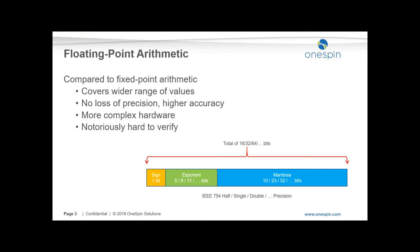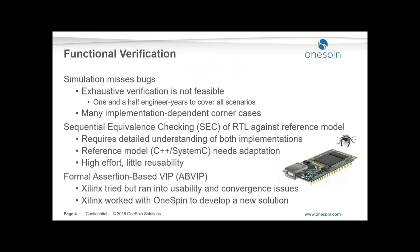We have half, single, and double precision formats, where we have a sign bit and exponents of 5, 8, and 11 bits respectively, and a mantissa which gets bigger — for a total of 16, 32, and 64 bits respectively for IEEE 754 half, single, and double precision. Now, how do we do functional verification and what are the solutions available today?